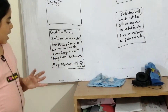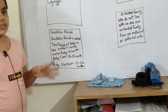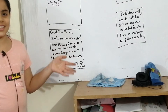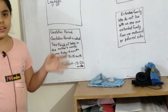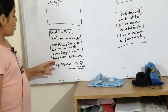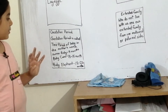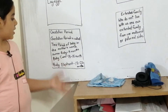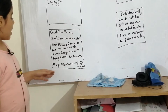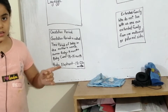The gestation period of a human being is nine months — like us, we stayed in our mother's womb for nine months. The gestation period of a baby camel is 13 to 15 months. The gestation period of a baby elephant is 18 to 22 months.